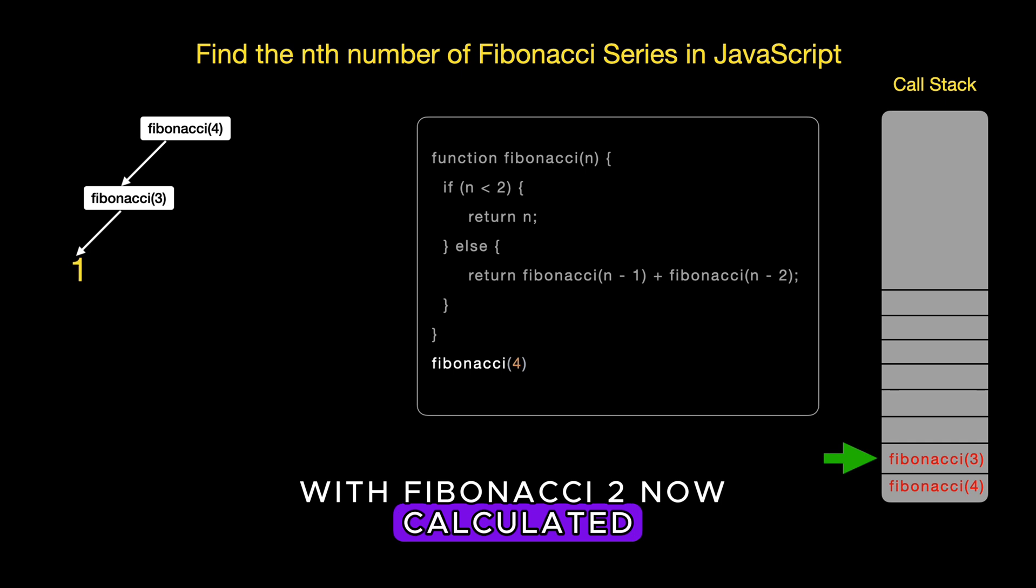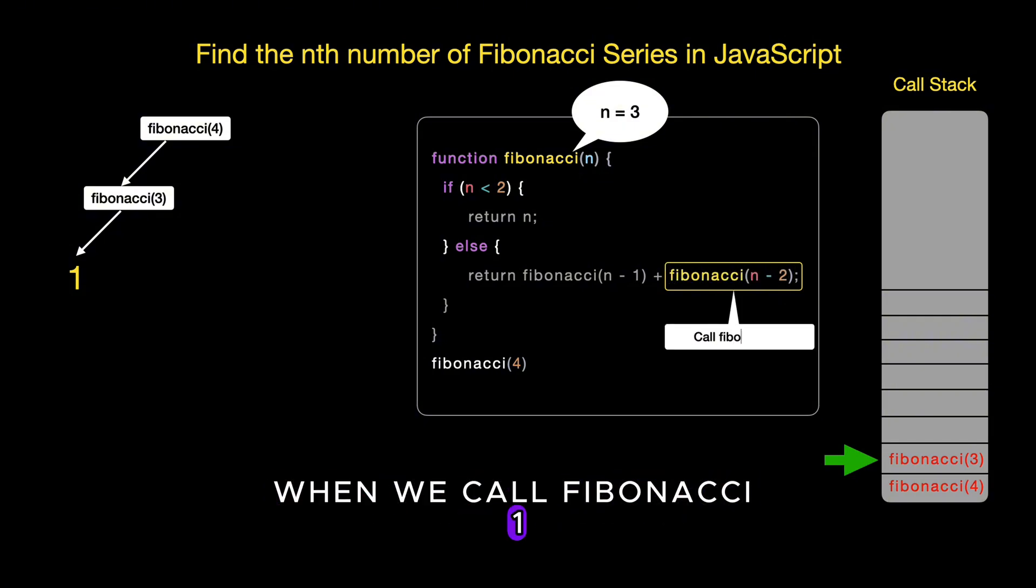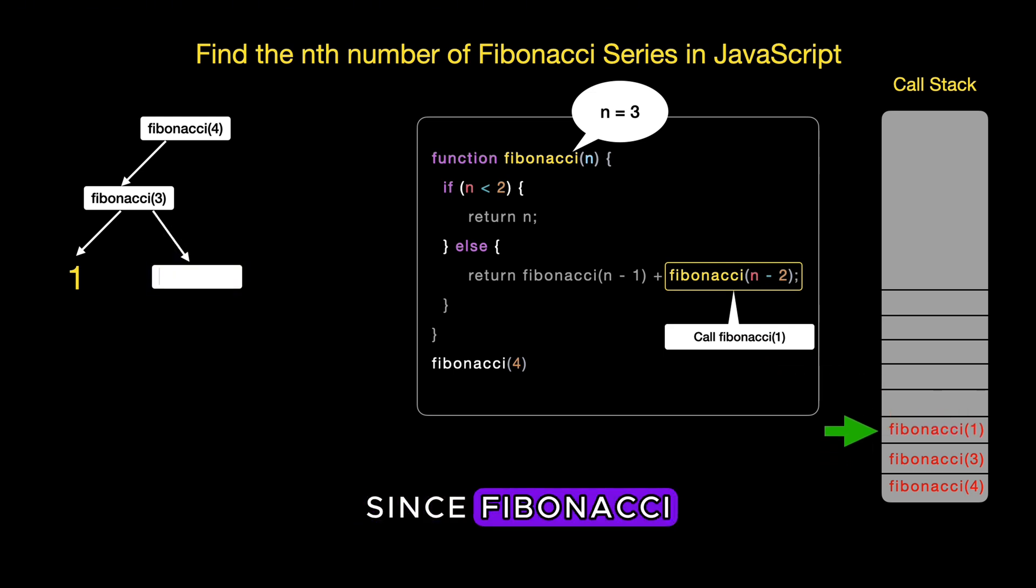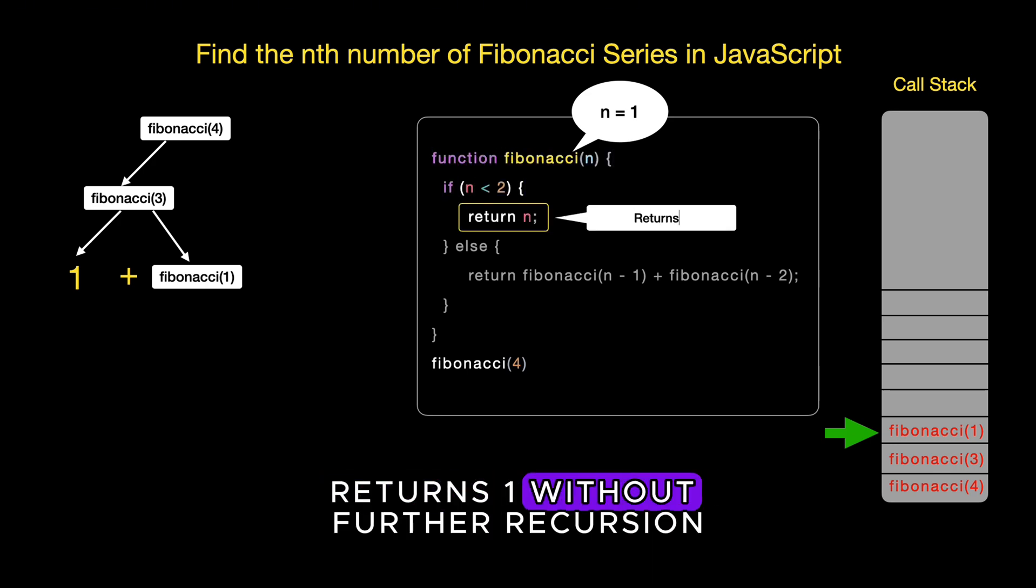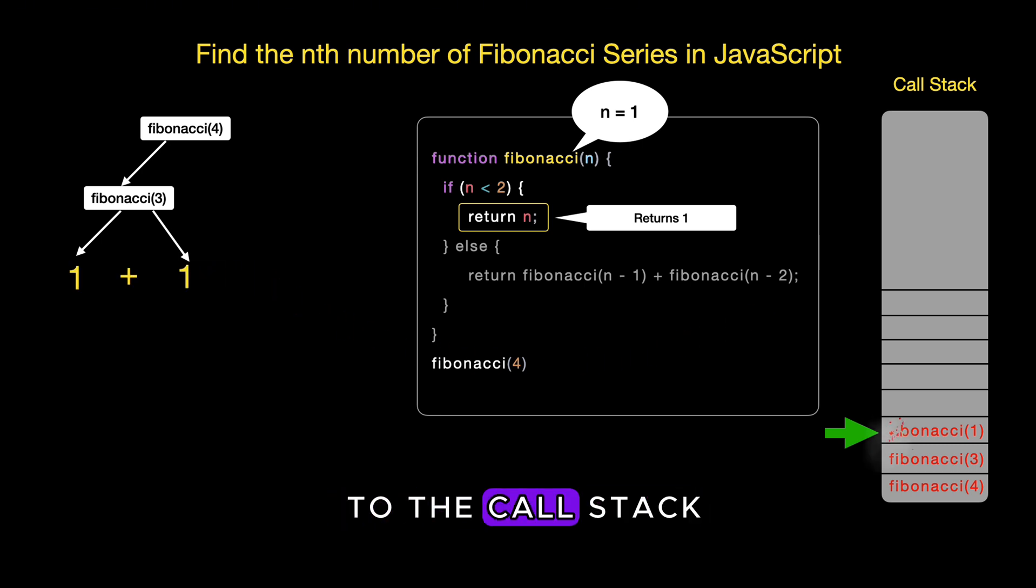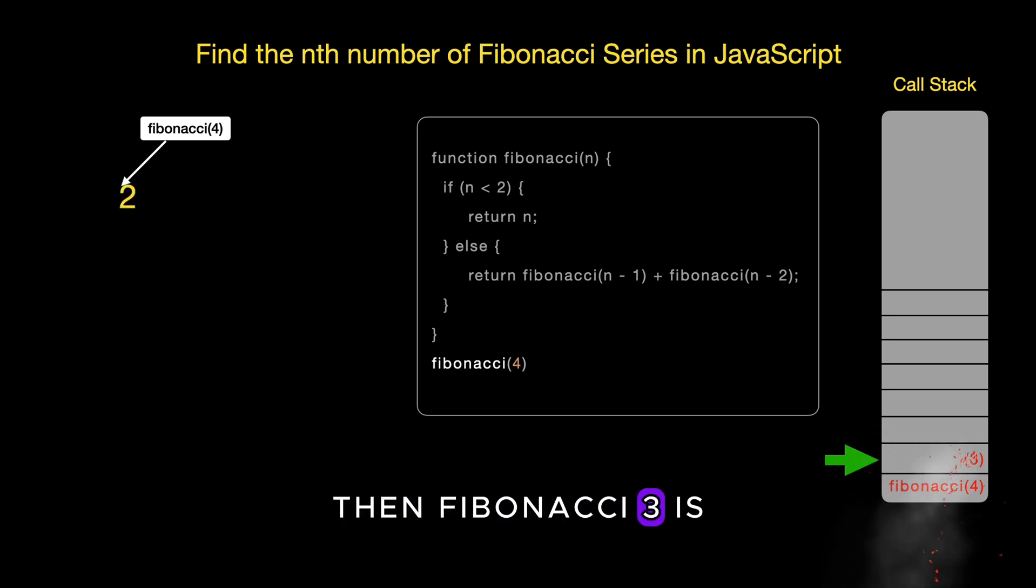With Fibonacci 2 now calculated for the process of determining Fibonacci 3, we must calculate the right part of the recursive calls, which is Fibonacci 1. When we call Fibonacci 1, it is added to the call stack. Since Fibonacci 1 is a base case in the Fibonacci sequence, this calculation is immediate, returns 1 without further recursion. This call is added to the call stack, but it resolves instantly and is removed as there are no additional operations to perform. With Fibonacci 1 calculated, we have all the parts needed to compute Fibonacci 3. The value of Fibonacci 3 is the sum of Fibonacci 2 and Fibonacci 1. Fibonacci 3 is 1 plus 1, which equals 2. Then Fibonacci 3 is removed from the call stack.